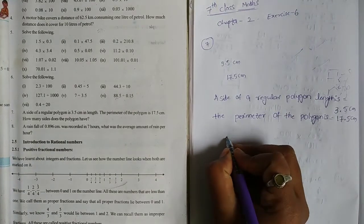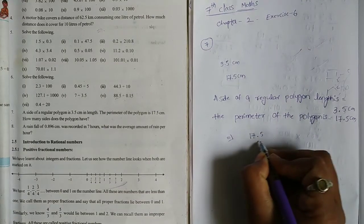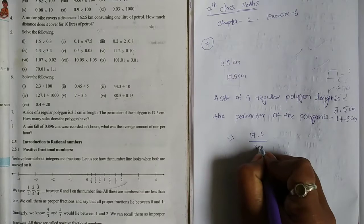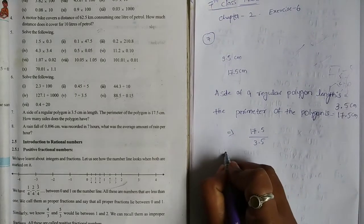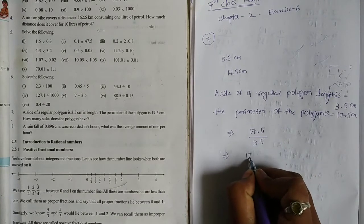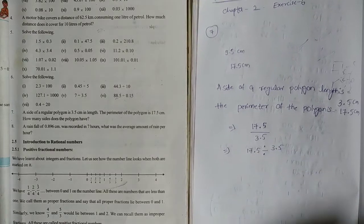First of all, we can do this. Perimeter divided by side. Here is 17.5. How do you write this? This is 17.5 divided by 3.5.